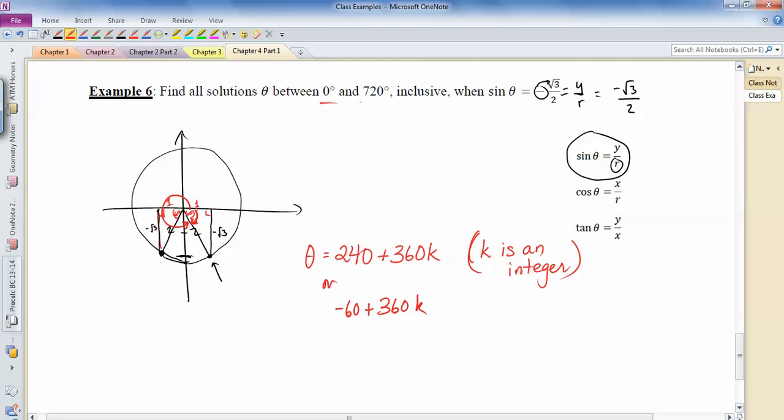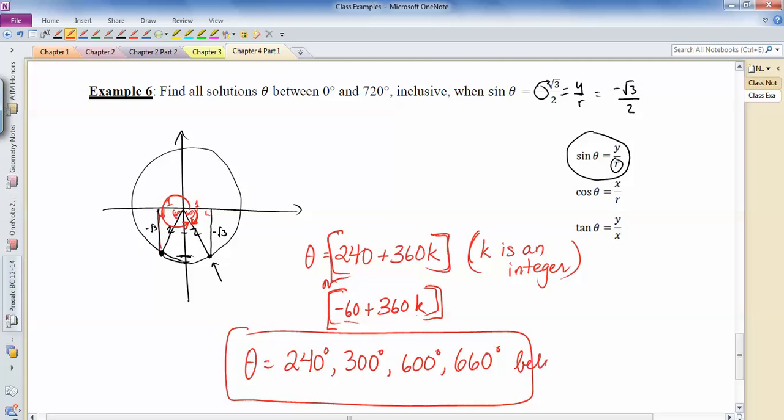So we need all the angles between 0 and 720 where we get this. So between 0 and 720, if k is 0, I get 240 degrees. This one will be negative 60, that's not in between, so that doesn't count. Then if k is 1, this will give me 300. This one will give me 600. And then when k is 2, this one will give me 660. And this one will be out of the range. So these are all the thetas between 0 and 720 degrees.